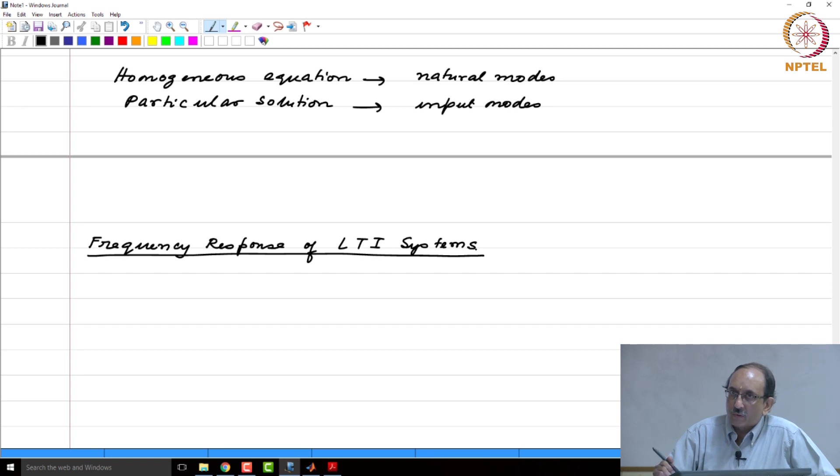Moment you talk about Frequency Response, remember Frequency Response is Z-transform evaluated on the unit circle. Therefore, we assume that e to the j omega belongs to the region of convergence.